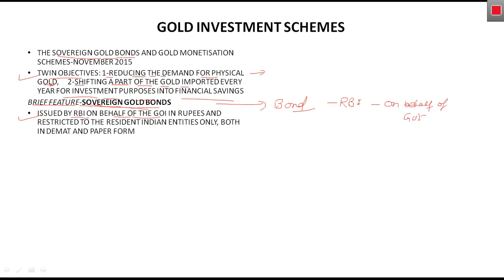It is restricted to resident Indian entities only. So who can buy the Sovereign Gold Bond? Only resident Indians — no foreign person can buy or invest in it. It is available in both Demat and paper form. A Demat account is a dematerialized account where you can hold things in dematerialized form rather than physical form. You can buy the Sovereign Gold Bond in either form.